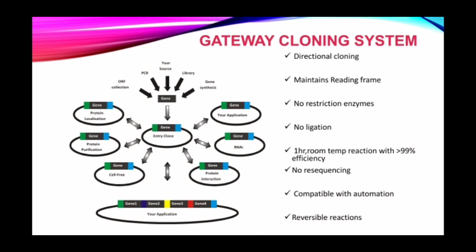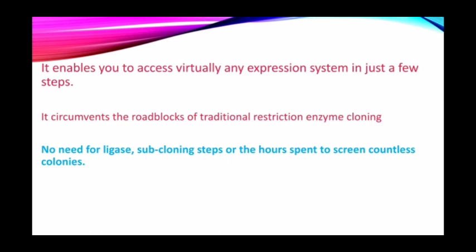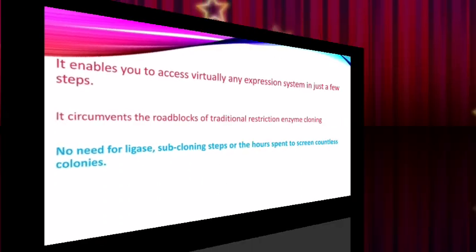This cloning system is a one-hour room-temperature reaction with more than 99% efficiency. There is no re-sequencing required in the gateway cloning system. This method is compatible with automation and is a reversible reaction — so after producing our desired DNA of interest, we can recover the LR clonase and BP clonase and reuse them for the next production.